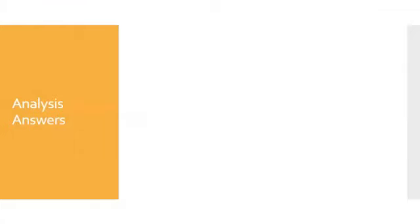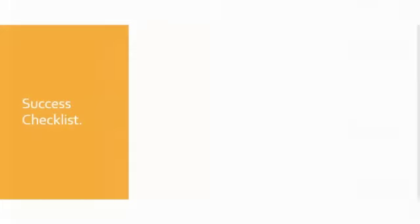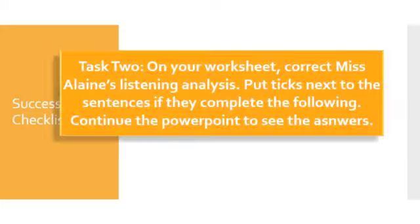Okay, here are my own analysis answers. You are now the teachers. I have divided my response into dynamics and expressive techniques. You have this in task two on your worksheet, so that when you look at the success checklist slide, you need to look at task two and tick the sentences that show I have done the following things.